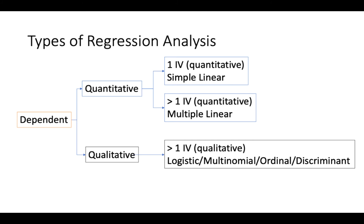There are several types of regression analysis — there's a lot — but we are only going to cover simple linear regression and multiple linear regression. If you have one predictor and one dependent variable, you can run simple linear regression. That's why it's called simple, because you have one-on-one. If you have more than one independent variables and one dependent variable, then it's going to be multiple linear regression — multiple is for the multiple predictors that you have.